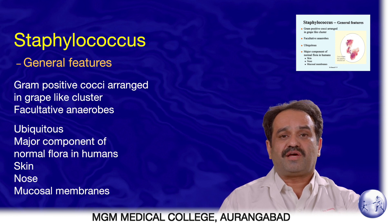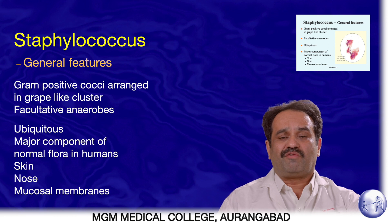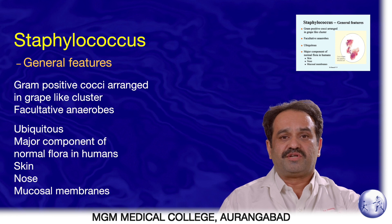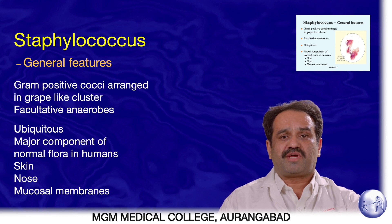Staphylococci is also a normal flora of the human body. It is present on the skin, in the nose, and on the mucous membranes. The primary niche for Staphylococcus aureus carriers is the nose of man.